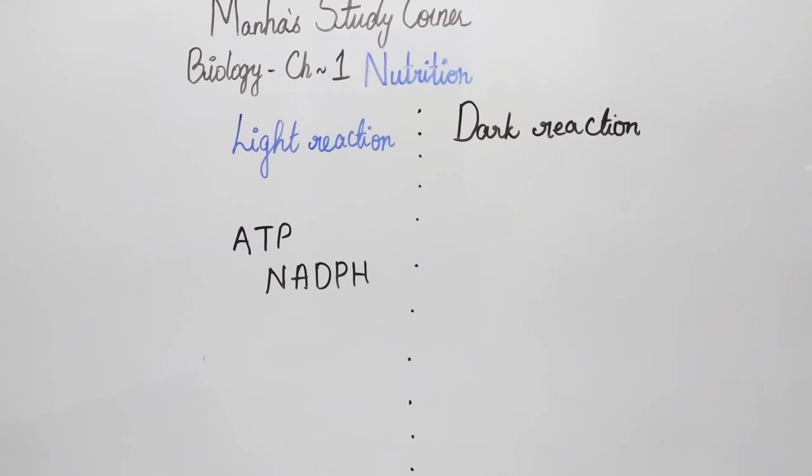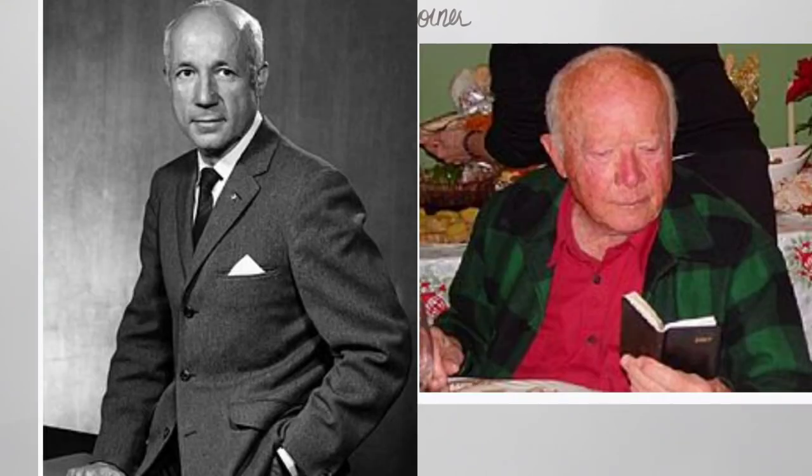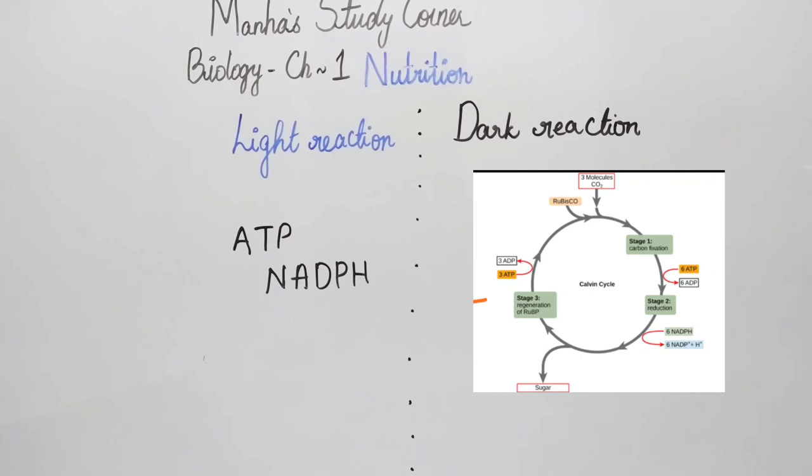So what happens to this chemical energy? Our next stage begins here: the dark reaction. The dark reaction was discovered by these two guys named Calvin and Benson, so this process is also referred to by the name Calvin-Benson cycle.